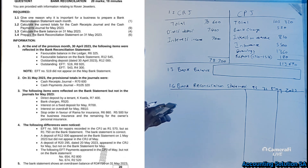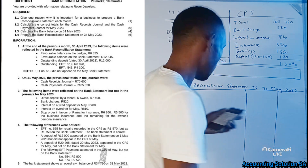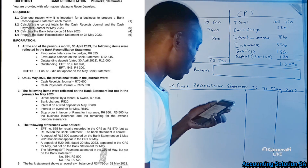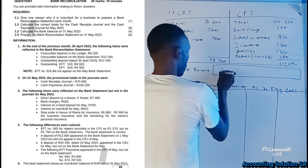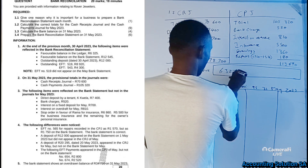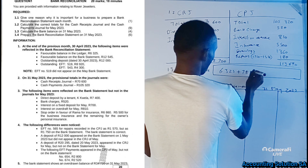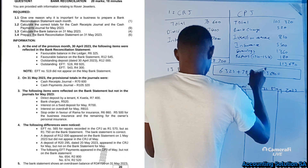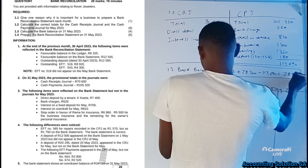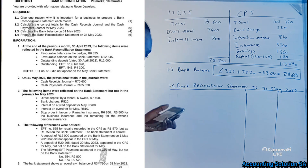For question 1.3, we calculate the bank balance. We start with the opening balance, then make adjustments to get the closing balance. The favorable balance in the ledger at the beginning is R6,325. We then add cash receipts of R78,700 and subtract cash payments of R113,690, and we get a balance at the end of R28,665.